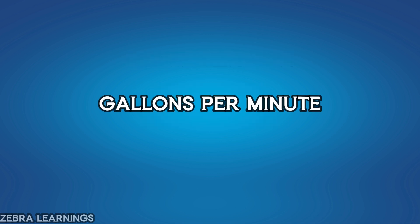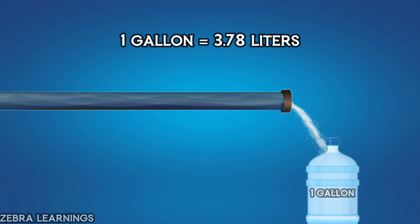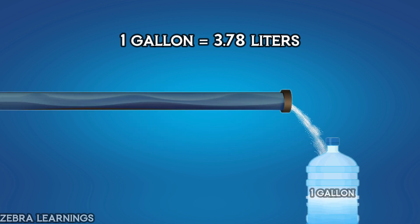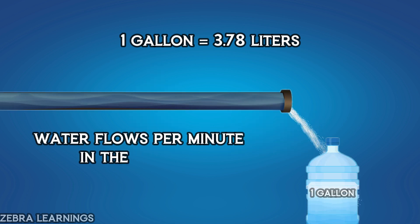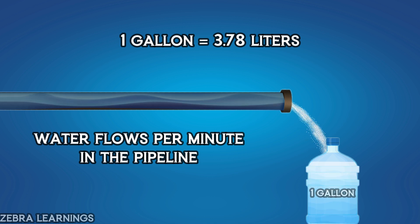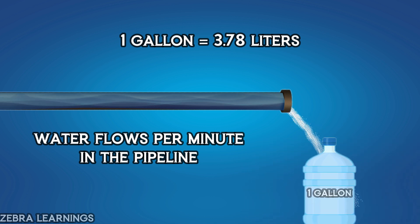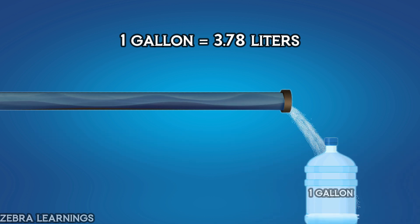Gallons per minute: 1 gallon is equal to 3.78 liters. Gallons per minute is used to measure how much water flows through a pipeline in 1 minute. It tells you the number of gallons that flow each minute.